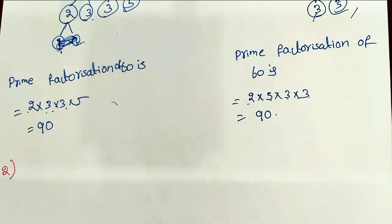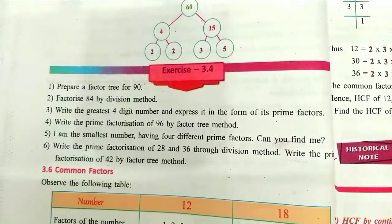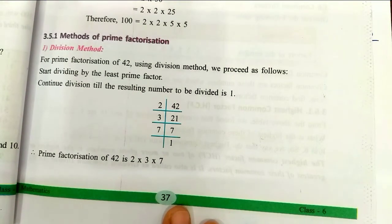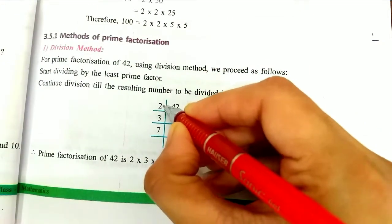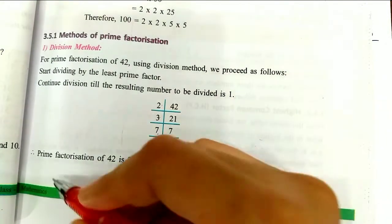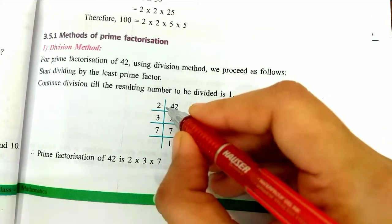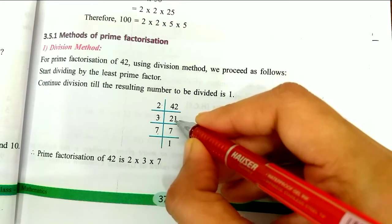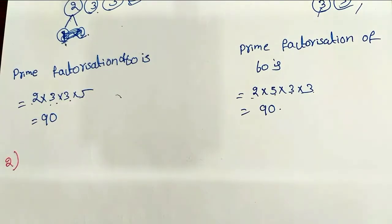Let's check the second problem. The second problem is to find the prime factors of 84 by the division method. We use the division method. We add division steps one by one for 84. Divisions are 2, 3, 7. This is the prime factorization. Here we have prime numbers — this concept is called prime factorization.